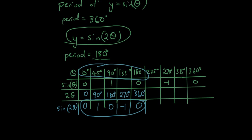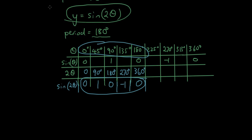So I hope that makes a bit of sense. So basically what's happening is that if you put a number inside the bracket before theta, so let's put in the number K.